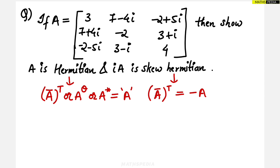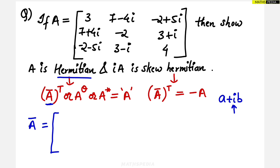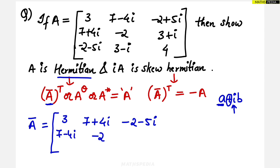First we will show that A is Hermitian — for that we find the conjugate, then transpose. For the conjugate, in complex numbers a+ib, only the imaginary part sign changes, not the real part. So 7−4i becomes 7+4i, and −5i becomes +5i, and so on. Writing out the full conjugate matrix: row entries become 3, 7+4i, −2−5i; then 7−4i, −2, 3−i; then −2+5i, 3+i, 4.